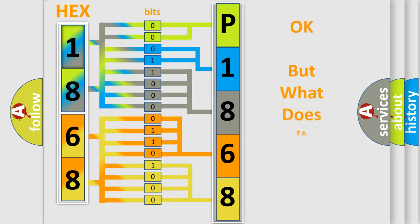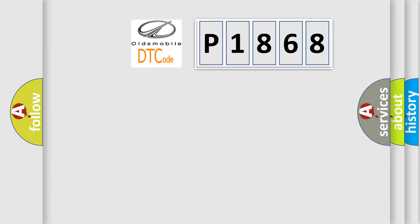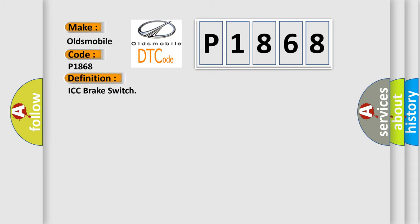The number itself does not make sense to us if we cannot assign information about what it actually expresses. So, what does the diagnostic trouble code P1868 interpret specifically for Oldsmobile car manufacturers? The basic definition is ICC brake switch. And now this is a short description of this DTC code.